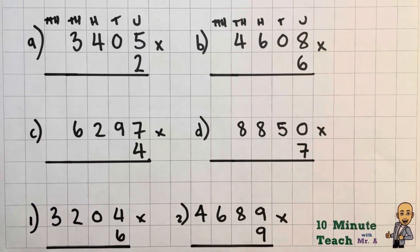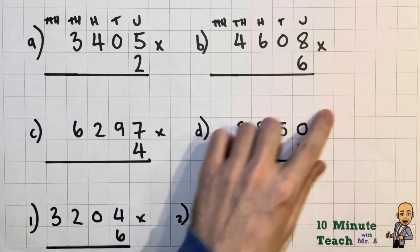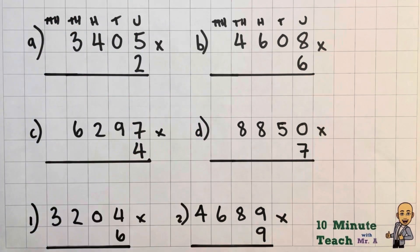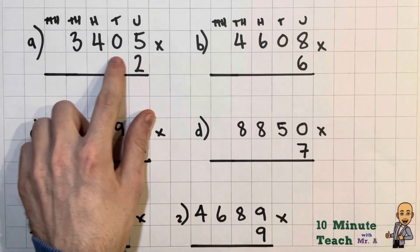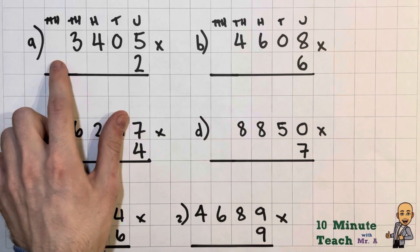Let me know how you get on in the comments below. Right then, let's jump straight into it. If I'm multiplying a number, another word for that and multiplication is finding the product. This first one I'm going to find the product of 3405 multiplied by 2.